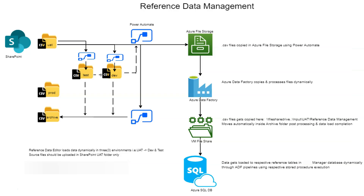This is the high-level architecture diagram I have created. On the left-hand side it starts from SharePoint, where there are various folders — UAT, dev, and test for the environments — and prod, which is a bit separated, along with an archive folder. Reference data is basically additional contextual or descriptive information that is not provided by the source system.